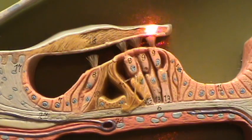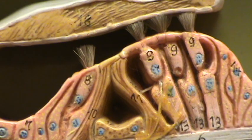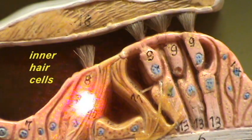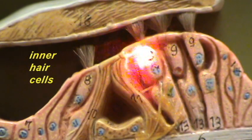This roof-like projection is referred to as the tectorial membrane. These cells are the inner hair cells, and then you see you have three rows of cells, also hair cells, and these cells are referred to as the outer hair cells.